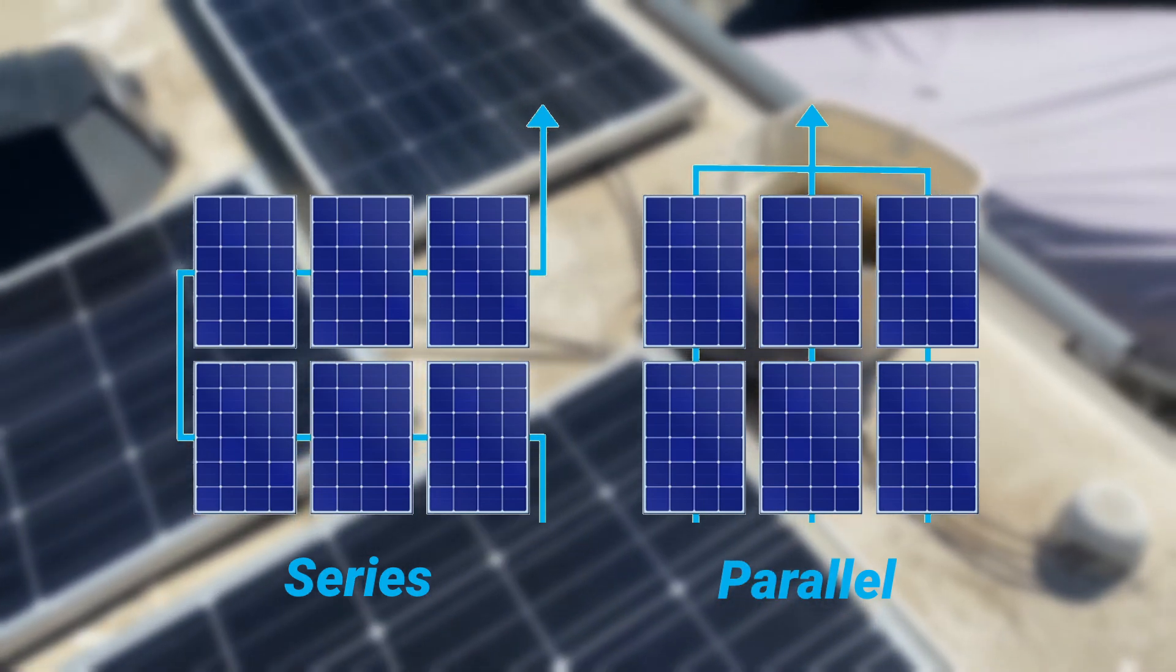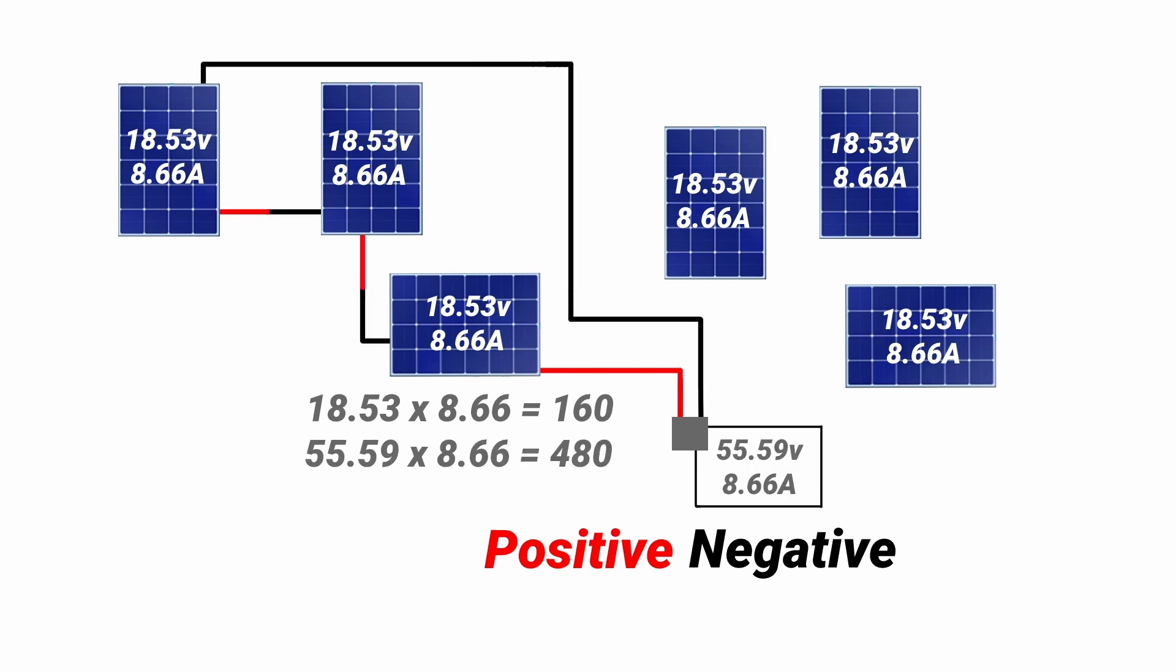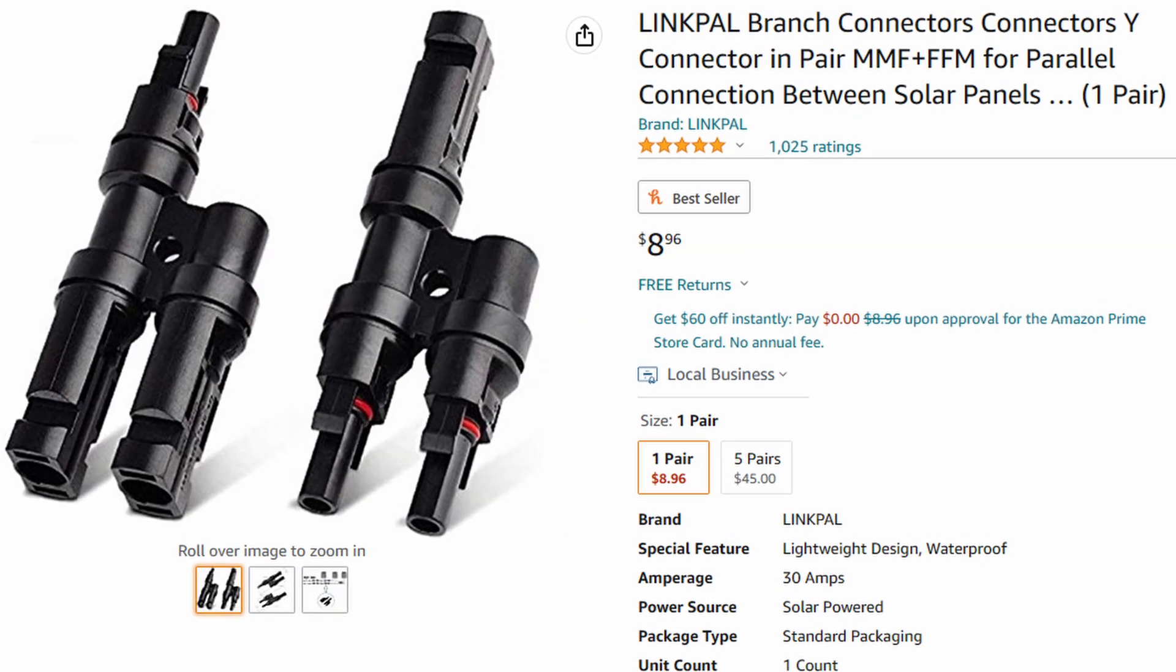So now that you know the difference between series and parallel, this is how I'm going to hook up the panels. The first half is in series as you can see the math adds up. And the second half is also in series. And those two sets of series are then put into parallel with a Y splitter.